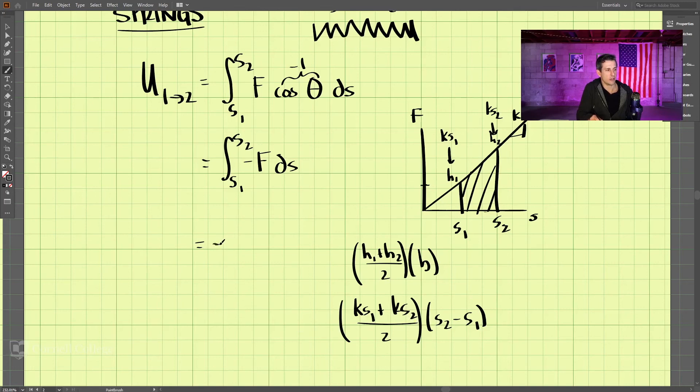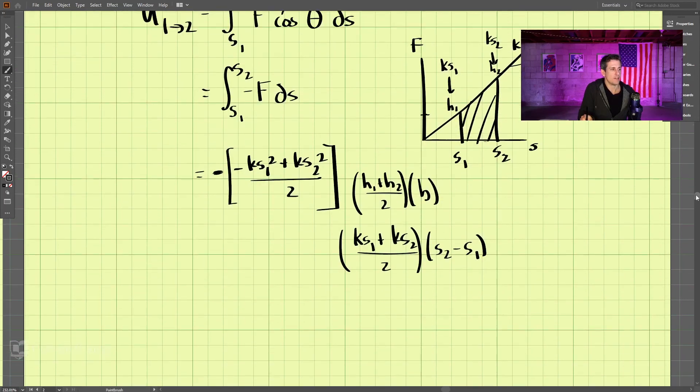But what this actually comes out to be, the area underneath the curve, let's put the negative sign out front here. The area underneath the curve then becomes negative ks1 squared plus ks2 squared divided by 2. And to simplify this a little bit more...